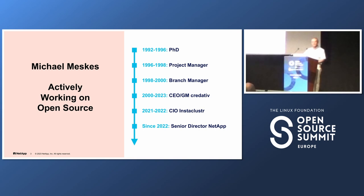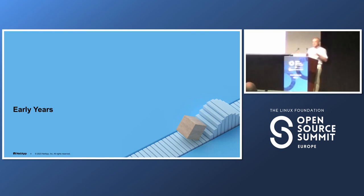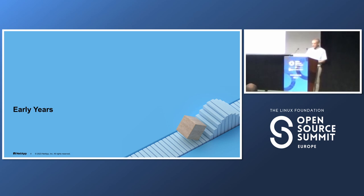The first couple of years in business were much less free software because free software wasn't that much of a thing back then. So let's start with the early years of free software — it was called free software back then. There's a reason it's called free software, but there's also a lot of confusion in the term. We know this is the open source summit — the new term that was coined in the 90s as a replacement for free software. It's slightly different, but that doesn't matter.